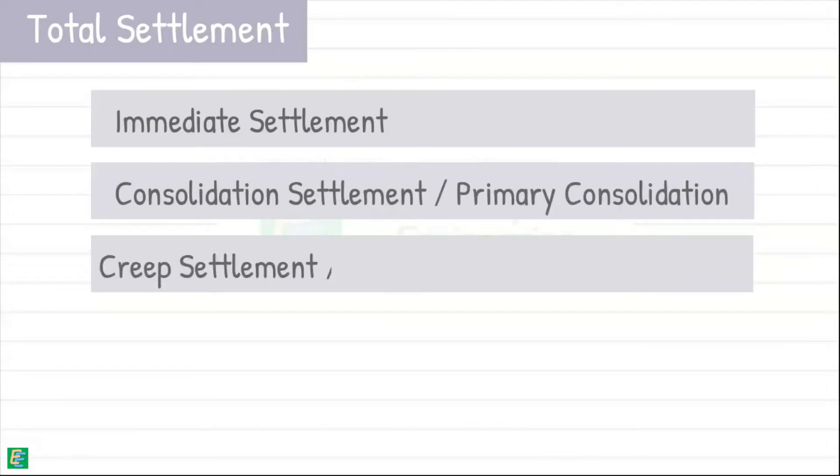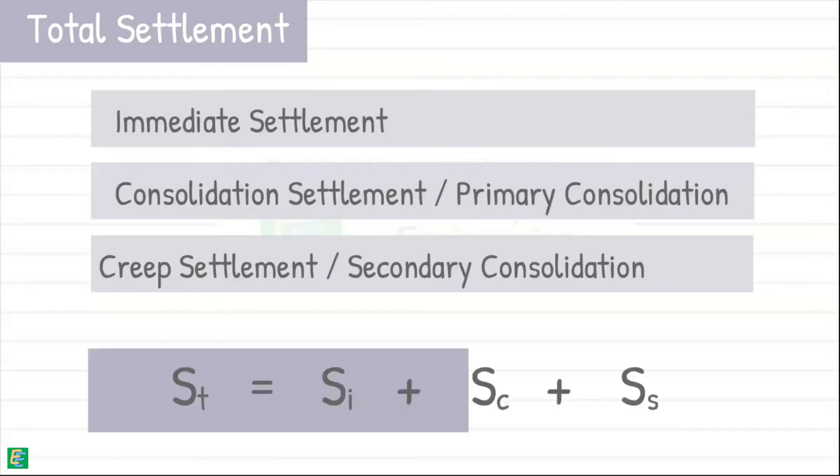Immediate settlement, consolidation settlement or primary consolidation, creep settlement or secondary consolidation. The total settlement of soil is the sum of all three factors.